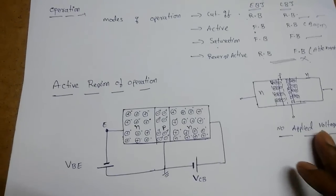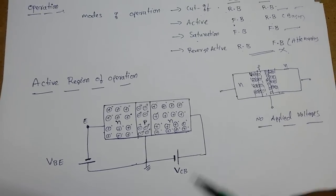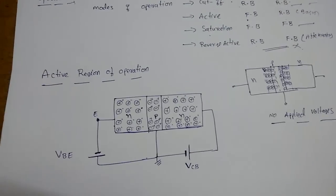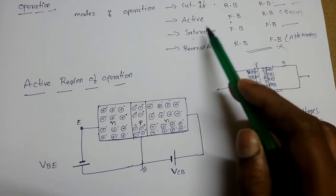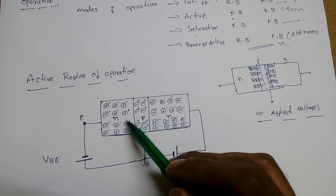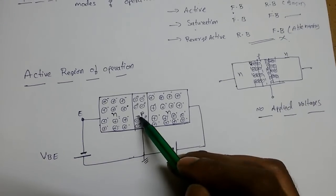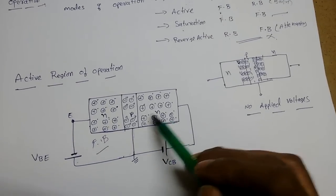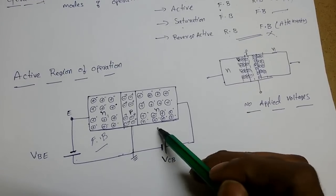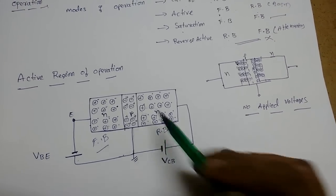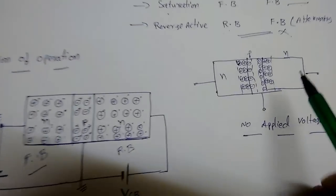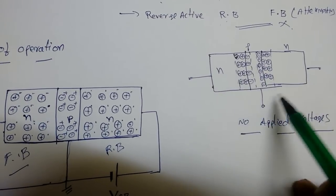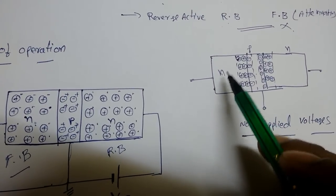We will first examine the active region of operation, then clarify cut-off, saturation, and reverse active modes. For active region operation, the emitter-base junction must be forward biased. For an NPN transistor, the N-emitter connects to the negative terminal and the P-base to the positive terminal for forward bias, while the N-collector connects to the positive terminal and the P-base to the negative for reverse bias.